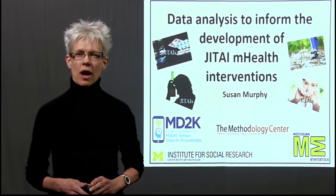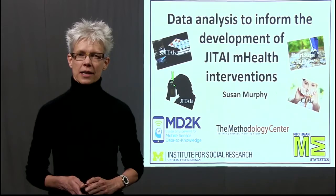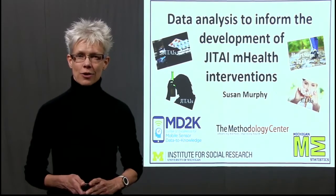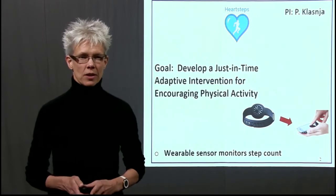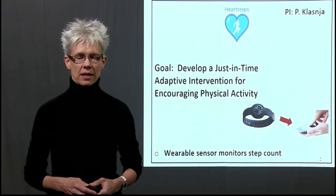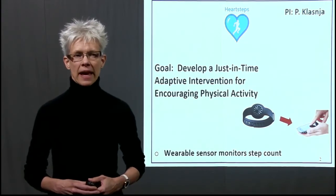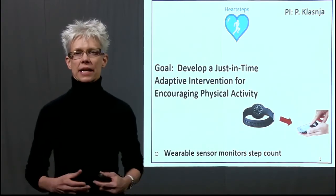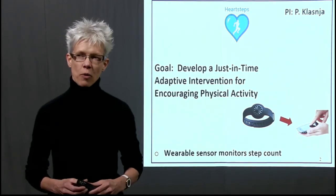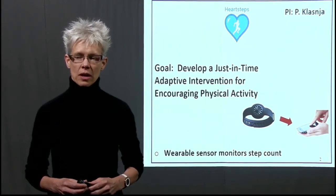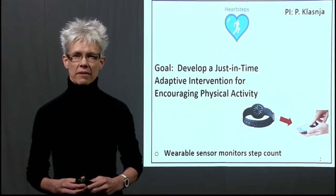I'm going to describe the types of analyses one can conduct in the context of a physical activity trial, in particular, HeartSteps. HeartSteps is a series of three studies, the first of which is a micro-randomized trial, and the goal of the three studies is to develop a just-in-time adaptive intervention for individuals to become active and maintain that activity.